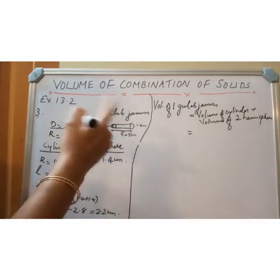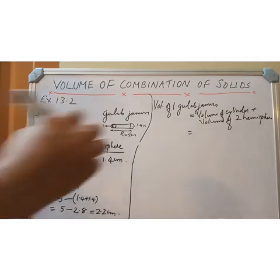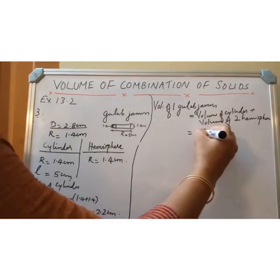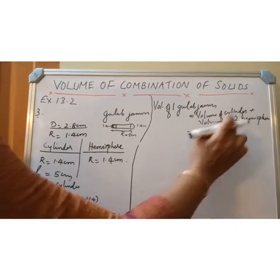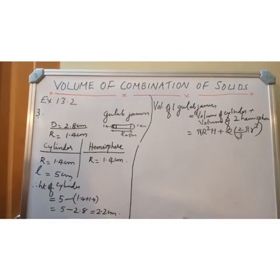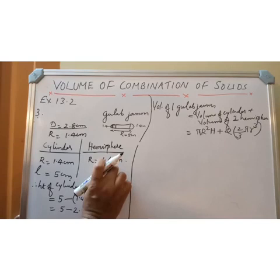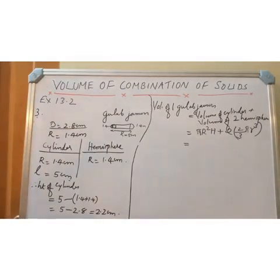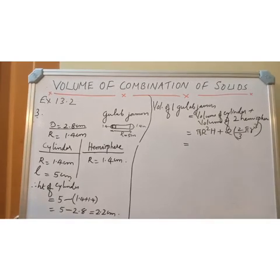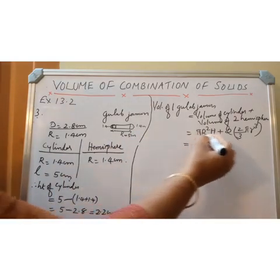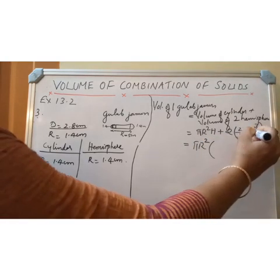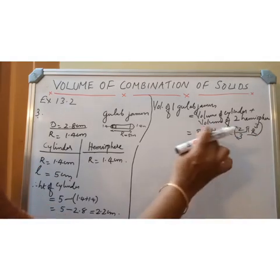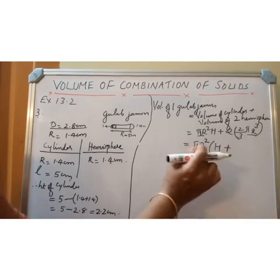We know the measurements and the formula. Volume of cylinder is πr²h, plus 2 volumes of hemispheres. Two times the volume of a hemisphere is 2 × (2/3)πr³, because only r is needed for the volume of a hemisphere. Taking πr² as a common factor, we can write the expression in terms of π.